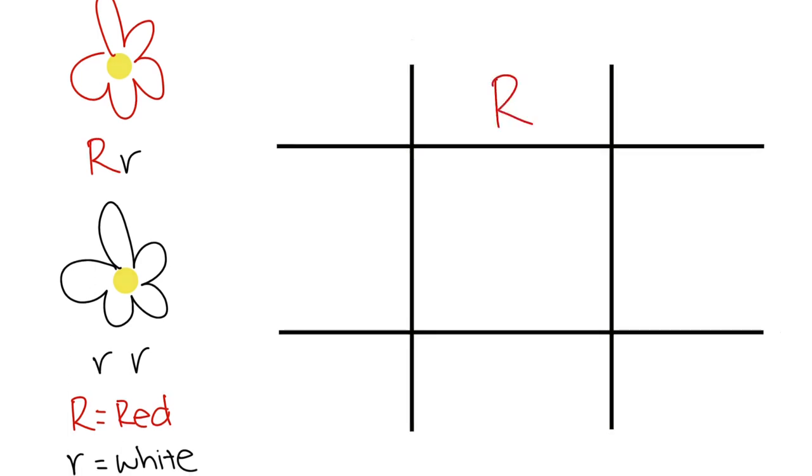As you can see, we place the heterozygous on top with the dominant alleles first, then the homozygous recessive on the side. As a result, we get two heterozygous and two homozygous recessive possibilities.